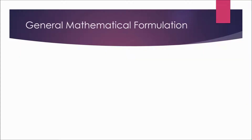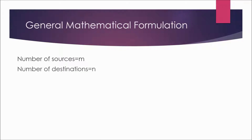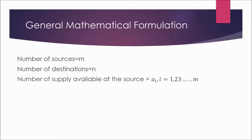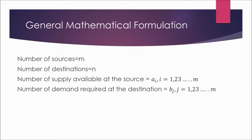We have learned about the general mathematical formulation of a transportation problem. Let us consider an example where there are m number of sources and n number of destinations. Let the supply available at the m sources — that is, the maximum supply available — be represented by ai, and let the minimum demand required at the destinations be represented by bj.